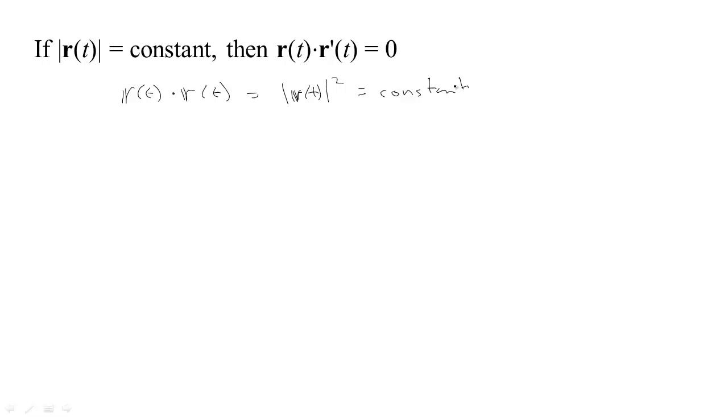then we know that if you take the derivative with respect to t of this dot product, since that dot product is some constant, we know the derivative turns out to be zero.